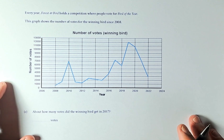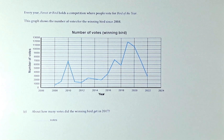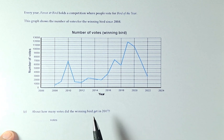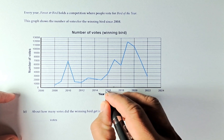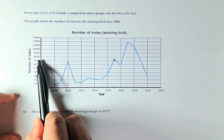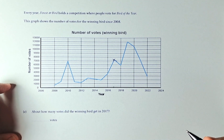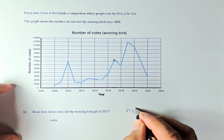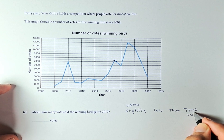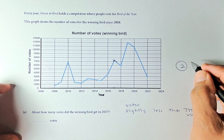Now we are looking at question 2E, which is outcome 2. Every year, Forest and Bird holds a competition where people vote for the Bird of the Year. The graph shows the number of votes for the winning bird since 2008. The question asks about how many votes did the winning bird get in 2017 — this tests your ability to interpret a graph. 2017 is between 16 and 17 on the graph. You take a ruler and measure it — it is slightly between 7,000 and 8,000, just below 7,500. So the number of votes will be slightly less than 7,500 votes. If you can interpret the graph, you will get outcome 2 in this paper.